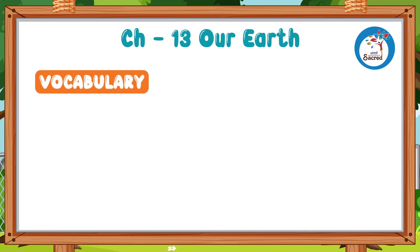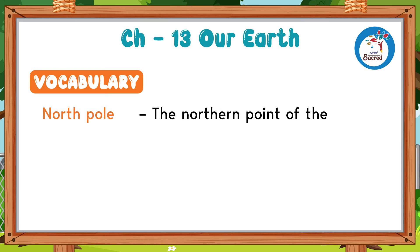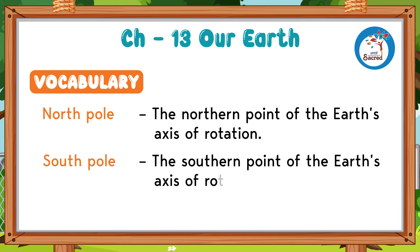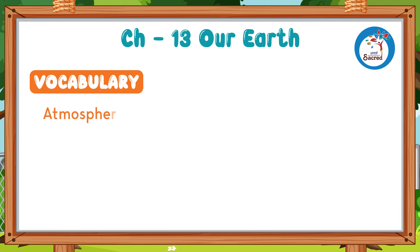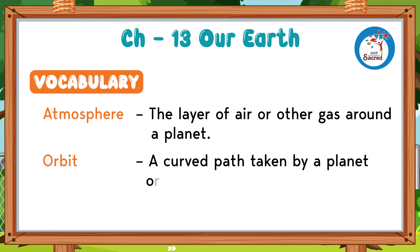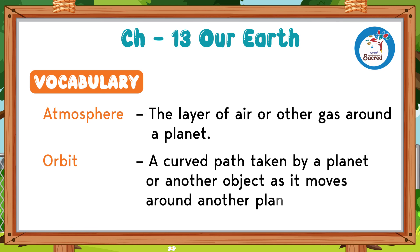Vocabulary. North Pole: the southern point of the Earth's axis of rotation. Atmosphere: the layer of air or other gas around a planet. Orbit: a curved path taken by a planet or another object as it moves around another planet.